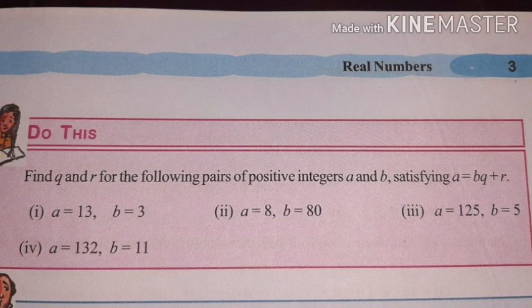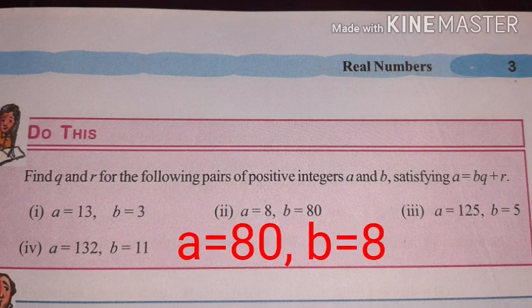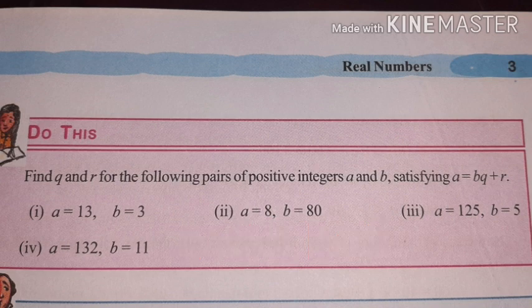First one: A is equal to 13, B is equal to 3. Second one: A is equal to 80, B is equal to 8. The second one got corrected — A is equal to 80, B is equal to 8. Third one: A is equal to 125, B is equal to 5. Fourth one: A is equal to 132, B is equal to 11.